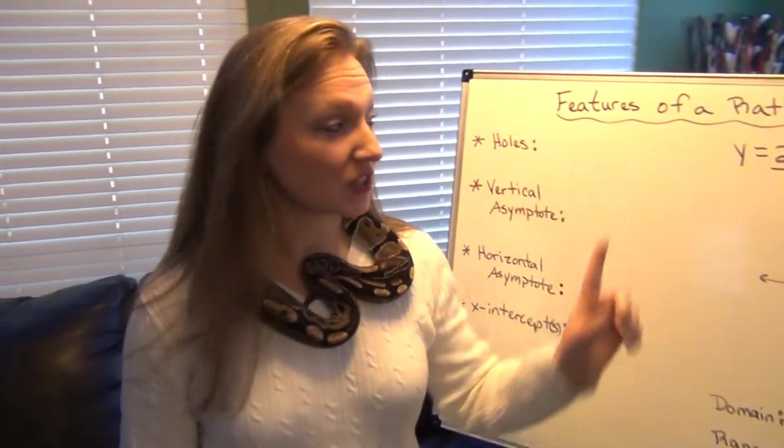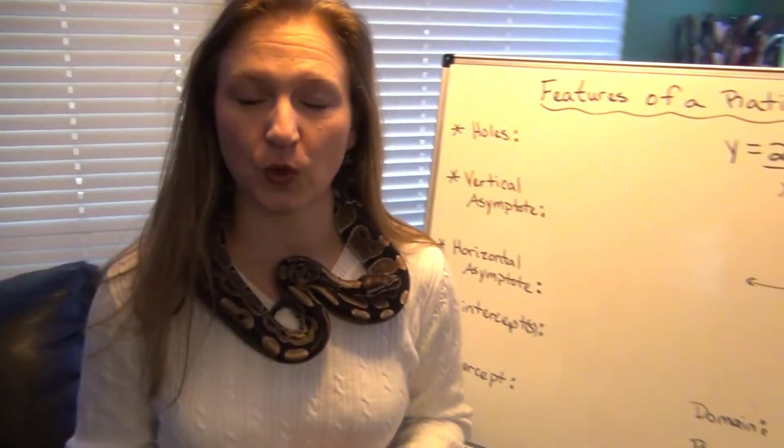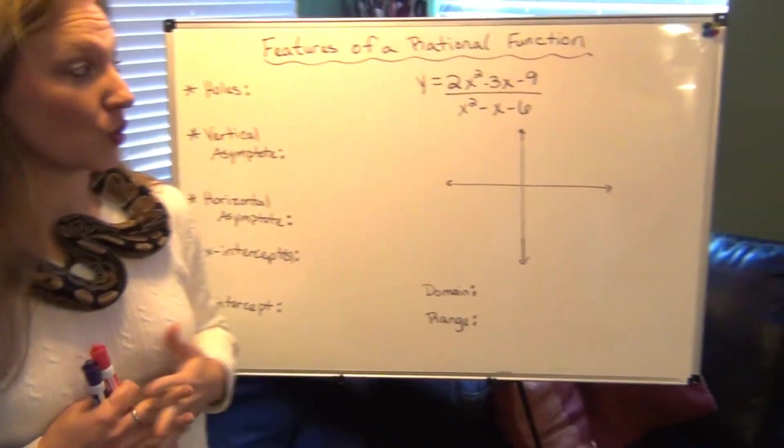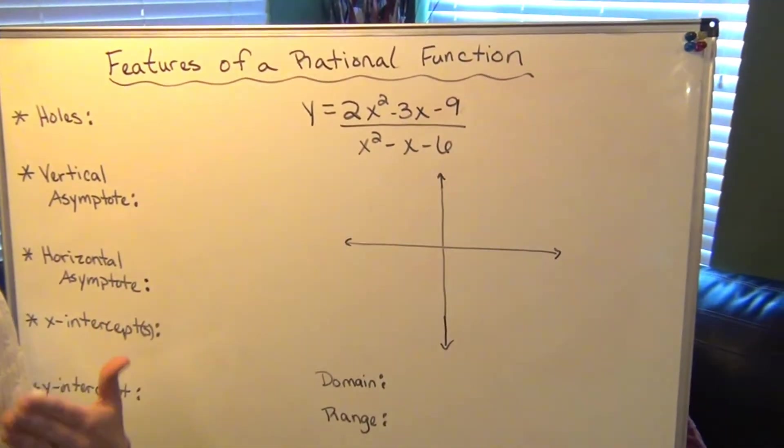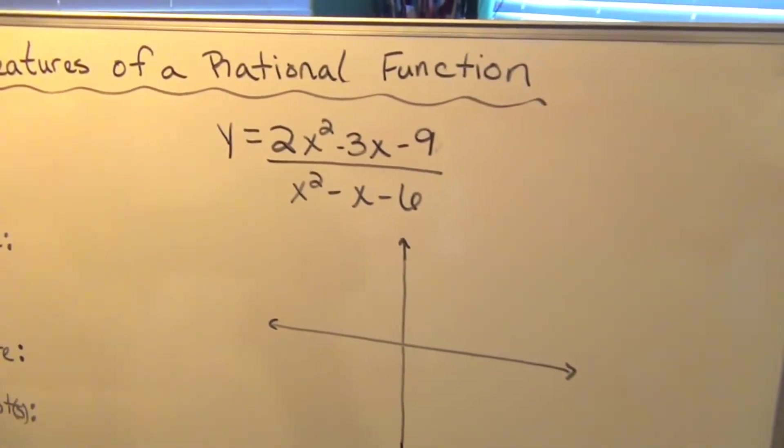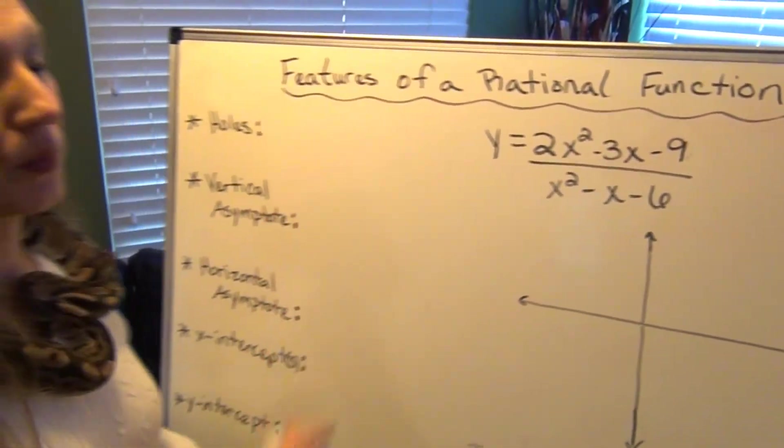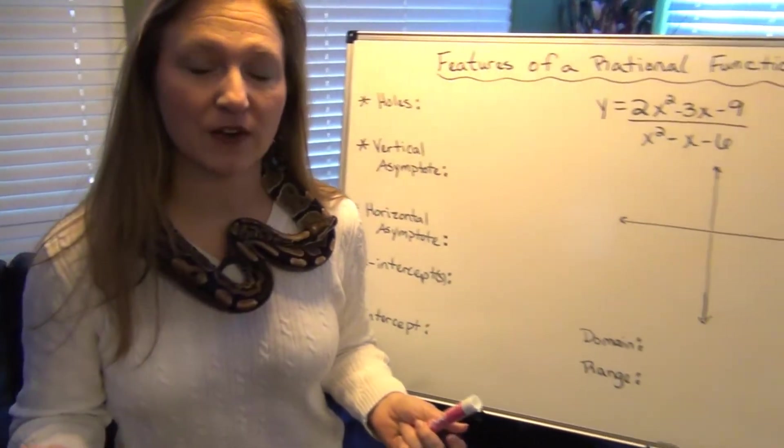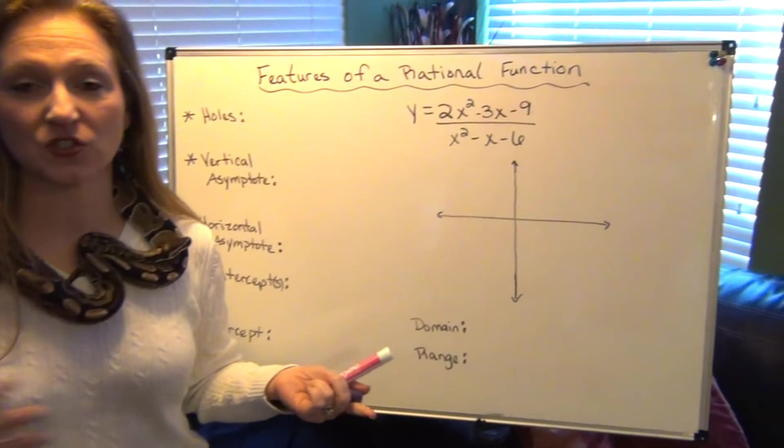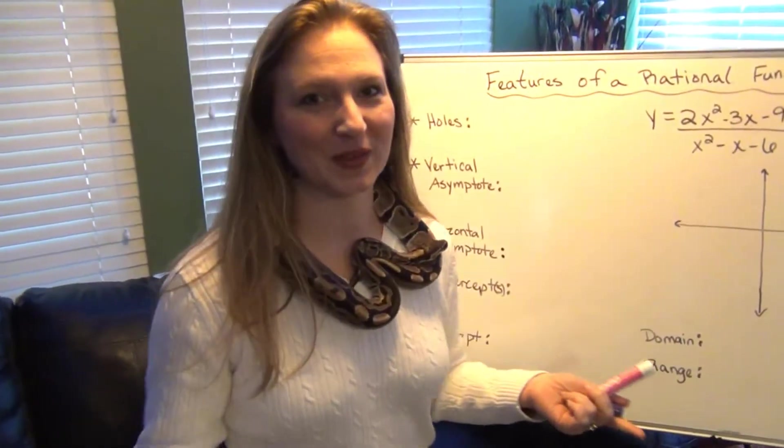Before we do anything with rational functions, we have to have it in factored form. That way we can see if there's going to be a hole and we also can see some other features as well. So before we do this, we need to make sure and put this in factored form. If you can't remember how to factor, refer back to one of my videos on how to factor by the Xbox method or by grouping.